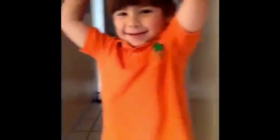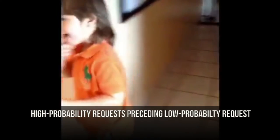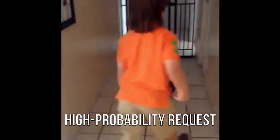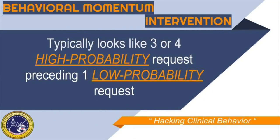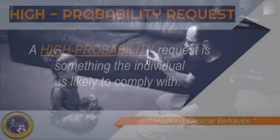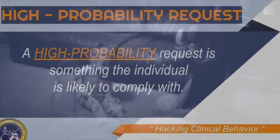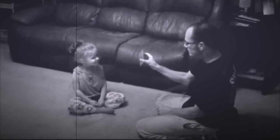Behavioral momentum as an intervention typically looks like three or four high-probability requests preceding a low-probability request. What do I mean when I say a high-probability request? It's a request that the individual has a history of being very likely to be compliant with. It does not have to be a demand that is necessarily easy for the learner, but it usually is a prompt for a low-effort mastered response.